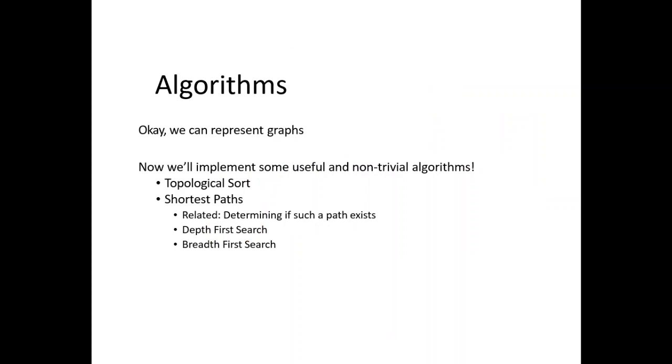If you check from algorithm annotation, you have to represent graphs. If you open it, there are some useful non-trivial algorithms: topological sort and the shortest path algorithms. We have related searches to determine if such a path exists: depth-first search and breadth-first search.